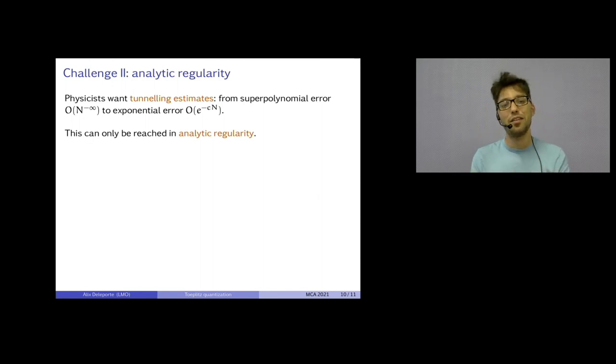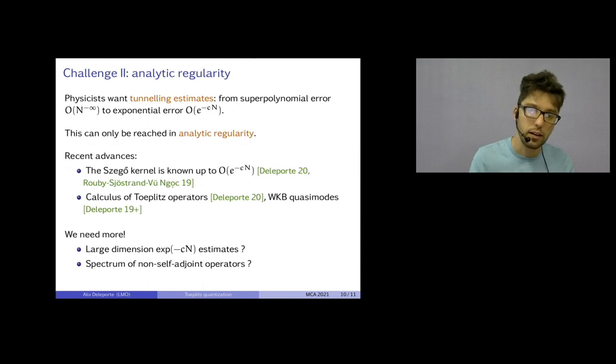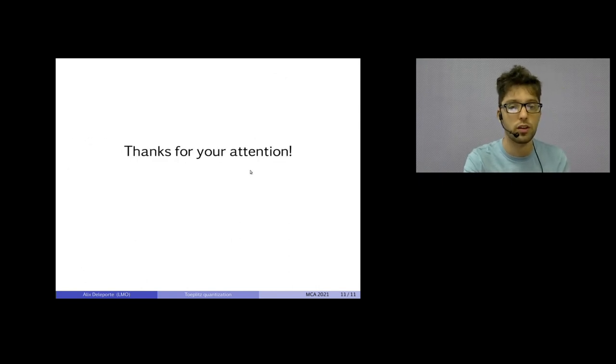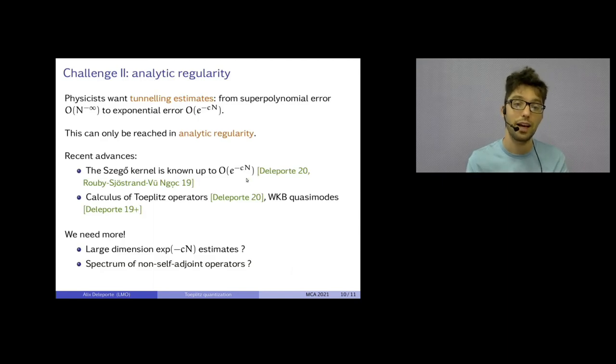The second challenge is that, okay, even on a fixed manifold, physicists, they want tunneling estimates. Or computations that we get up to any fixed power of h-bar, they want O of e^{-c}. And for this, you need analytic regularity. So, recently, I and another team obtained, and the proof was simplified later on, that we know the Szegő-Bergman kernel up to this precision when everything is analytic. And we know how to compose and inverse operators. But we don't know how this works in large dimensions. And the analytic calculus is in its early stages, but there are many natural questions, such as the spectrum of non-self-adjoint Toeplitz operators and things like this.